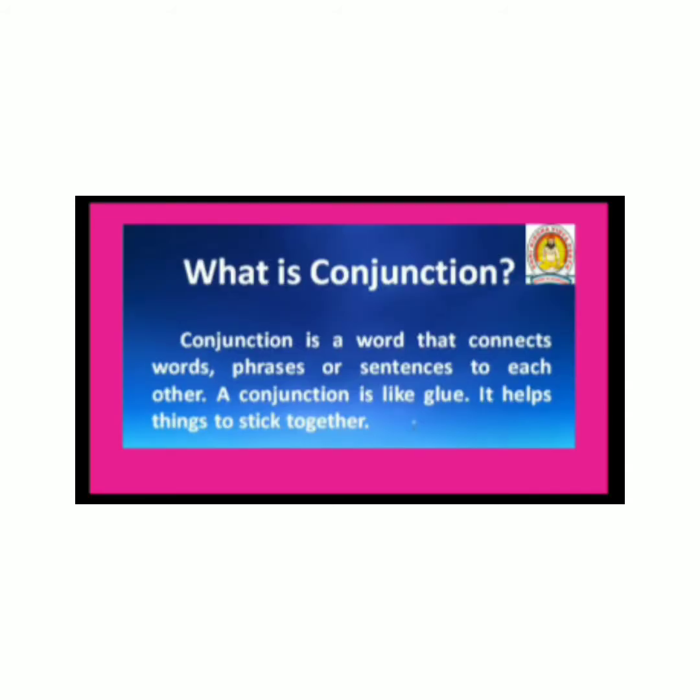What is Conjunction? A Conjunction is a word that connects words, phrases, or sentences to each other. A Conjunction is like a glue — it helps things to stick together. It is a word, phrase, or sentence that is connected to each other.